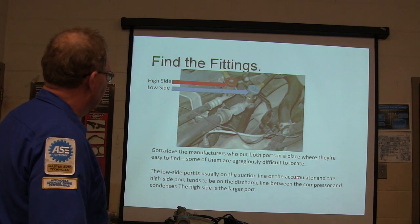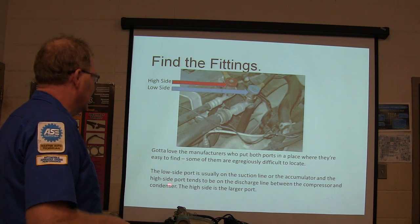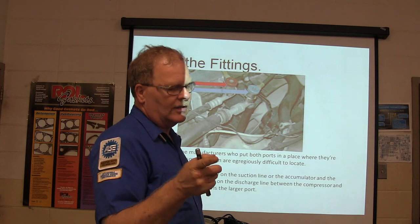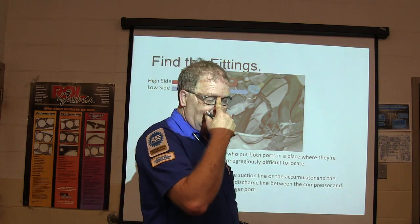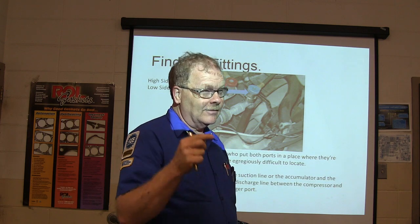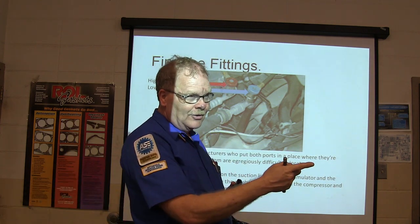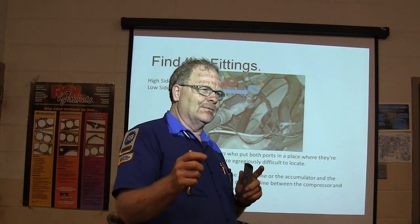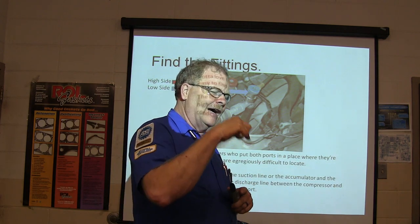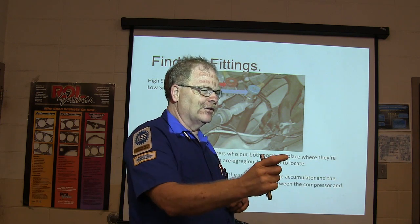Low-side ports are usually on the suction line or on the accumulator. The high-side port tends to be on the discharge line between the compressor and the condenser. On the Jeep she's working on, it looks like the low side is on the liquid line, but the orifice is between the condenser and the charge port. On GMCs and Chevrolets, it looks like the high and low side ports are on the same line — the orifice is between those two.